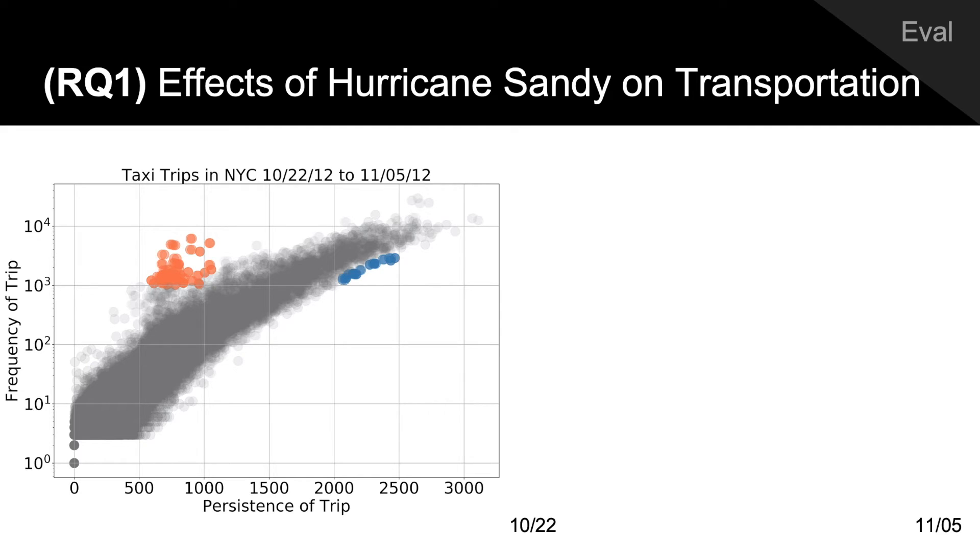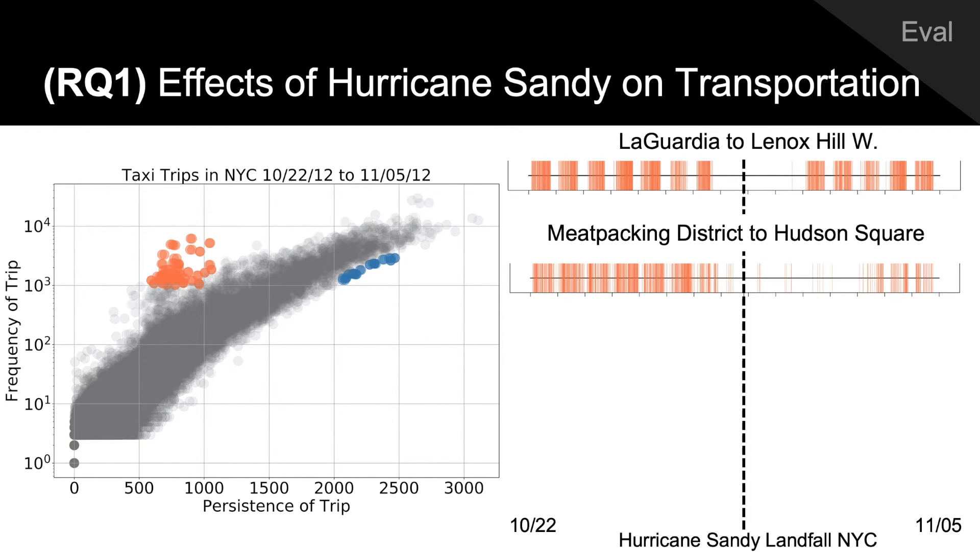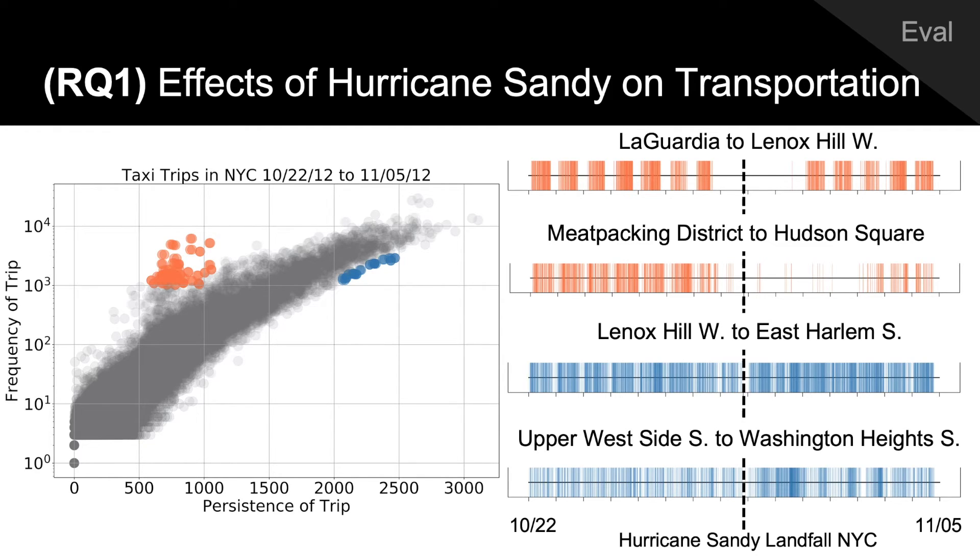When analyzing taxi traffic in New York City for the two weeks surrounding Hurricane Sandy, we discovered that bursty snippets reveal neighborhoods that were brought to a standstill during the hurricane, while subtly persistent snippets reveal neighborhoods where taxi traffic persisted through it.